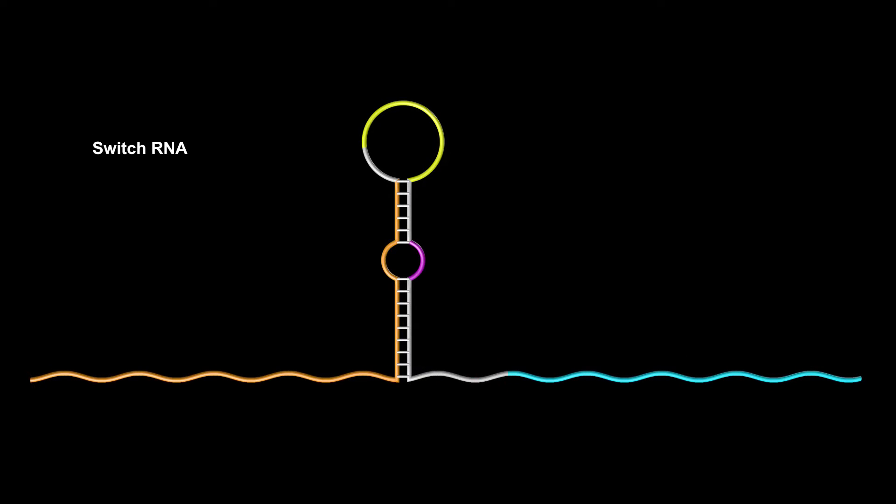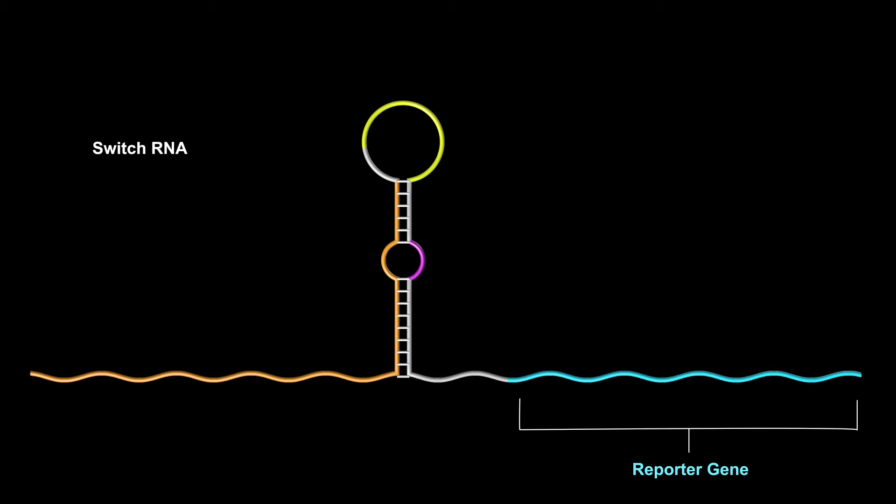The toehold switch is an RNA that encodes the gene for a protein of interest. However, translation of the gene is initially turned off.